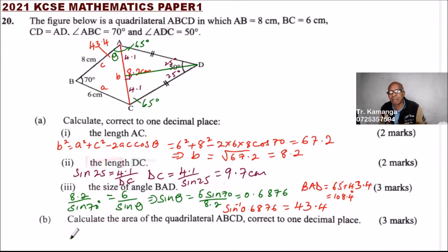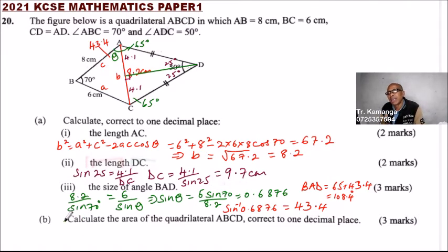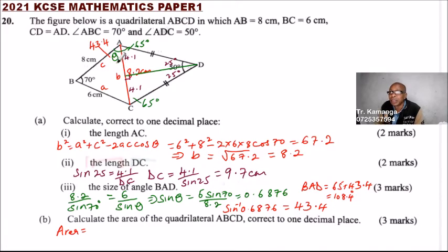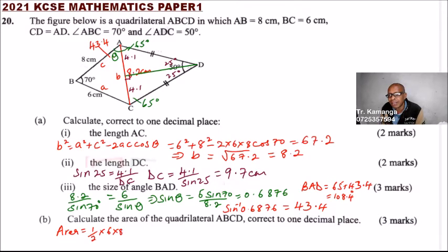Part b: calculate the area of the quadrilateral ABCD to one decimal place. We can get the area by finding the area of triangle ABC. The area of triangle ABC equals one half times AB times BC times the sine of angle ABC, which is one half times 6 times 8 times the sine of 70.